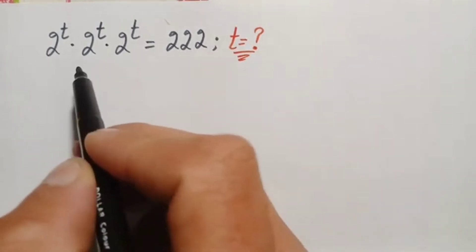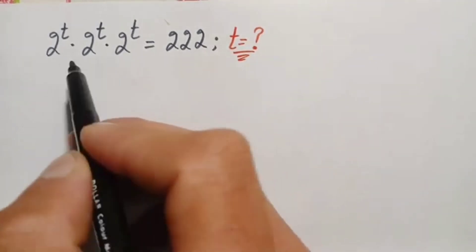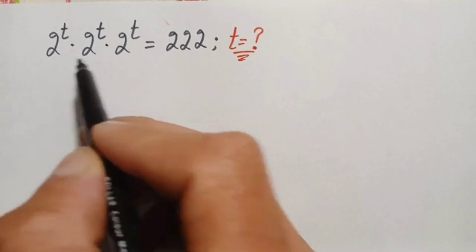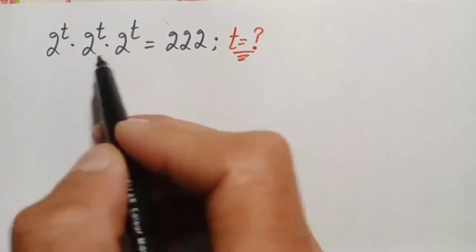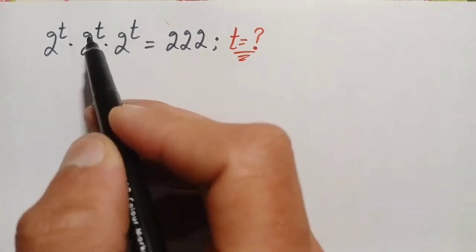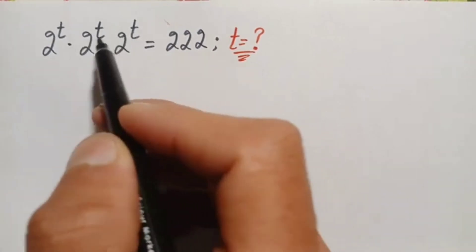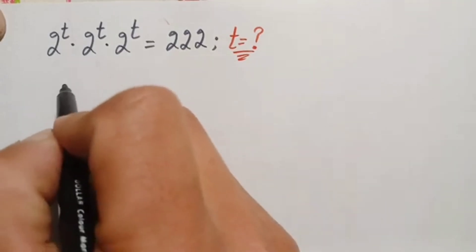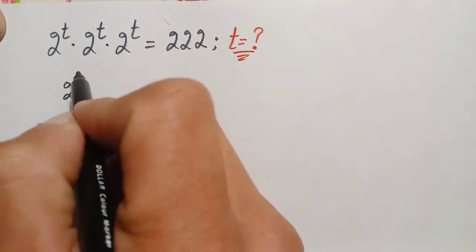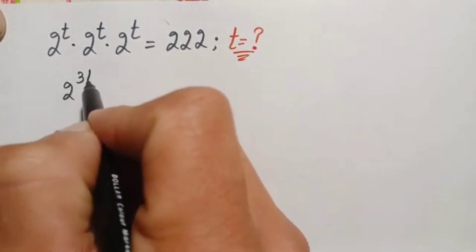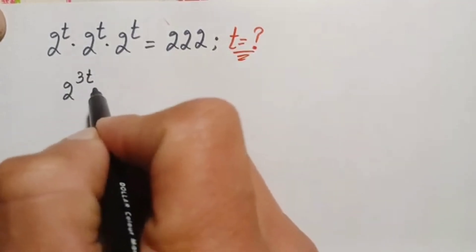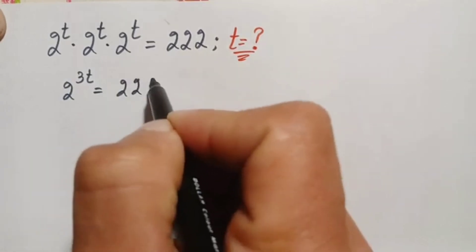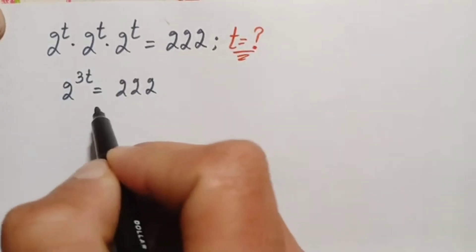On the left hand side there are the same numbers multiplied three times having the same power. Since the base is the same, we will add the powers — adding t three times gives 3t. So the left hand side will become 2 raised to the power 3t is equal to 222.